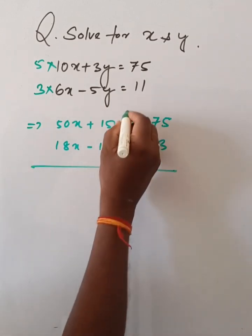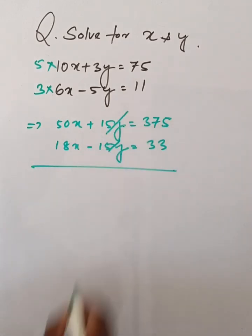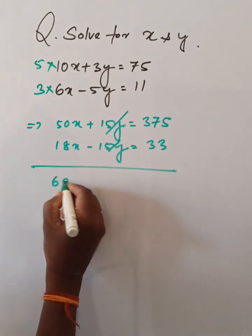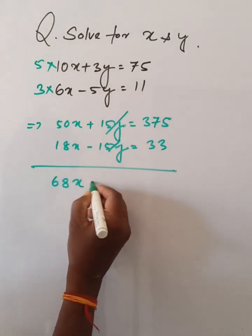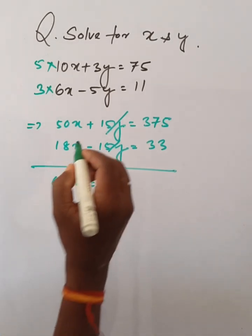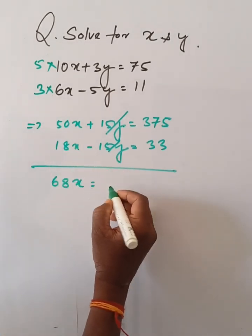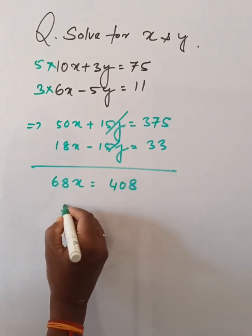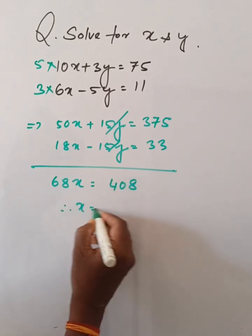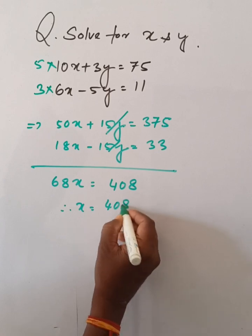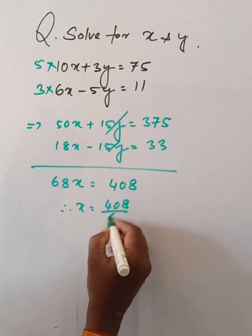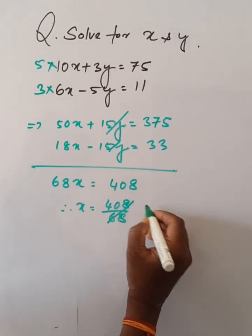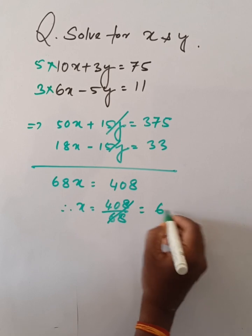Then, cancelling the plus and minus y terms, we get 68x is equal to 408. Therefore, x is equal to 408 divided by 68, that is 6.